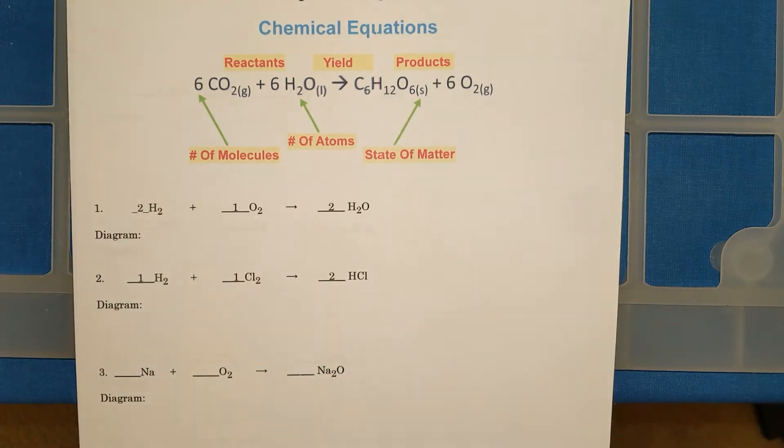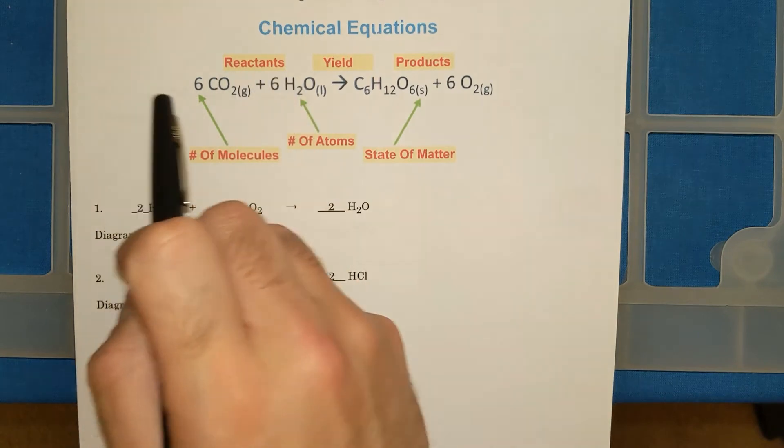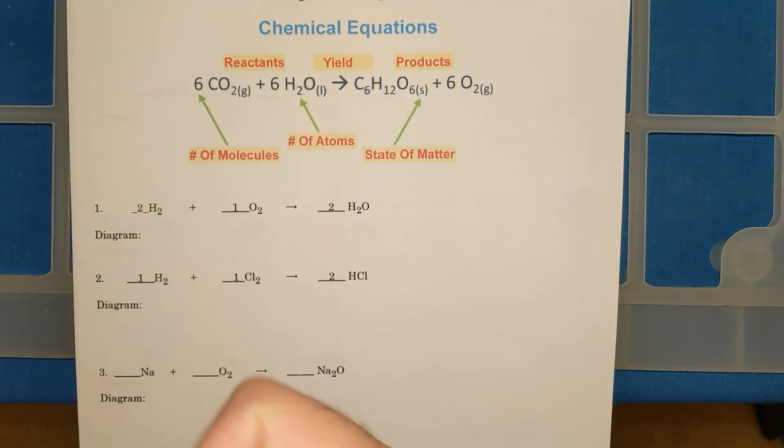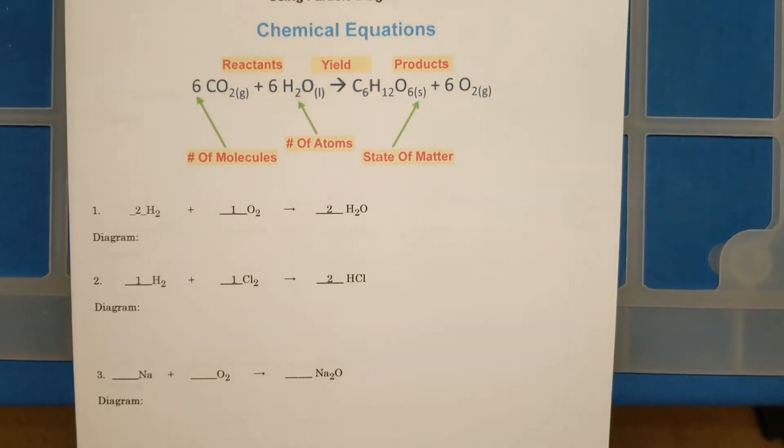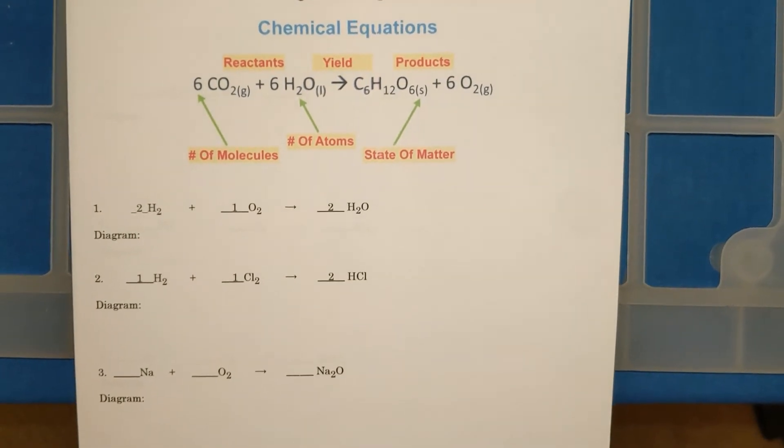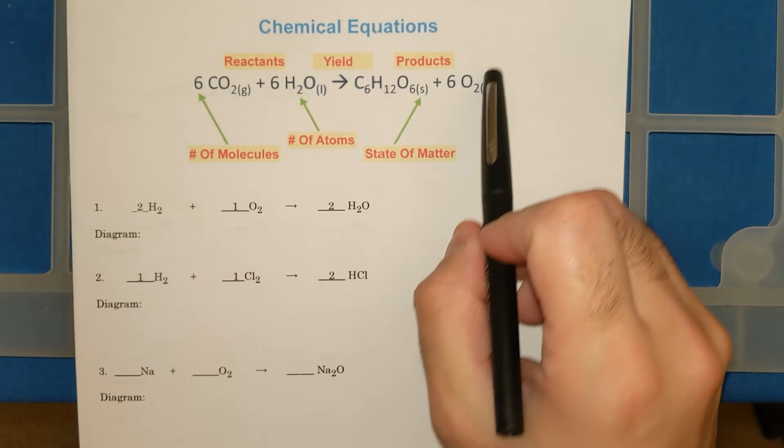Just to refresh and remind you, if we have a chemical equation, the left side of the equation, the things that you start with are known as the reactants. The arrow we call the yield. The things that we get at the end, or the elements or compounds we get at the end, we call the products.